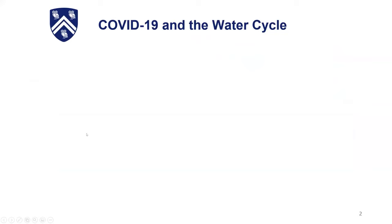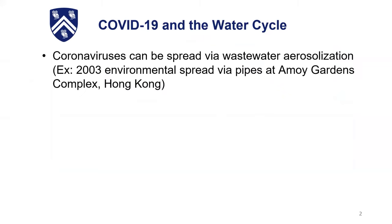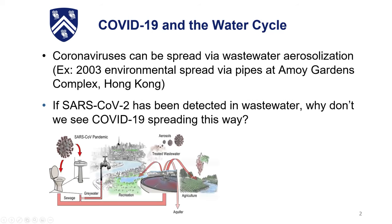The motivation for this work came from thinking about how COVID-19 will be impacted by the water cycle and vice versa. We knew from the last outbreak of SARS in 2003 that it could be spread through wastewater aerosolization. We saw this in Hong Kong, where in an apartment complex, one family had gotten infected with SARS, and afterwards many families were infected — traced back to leaky bathroom pipes combined with poor air ventilation systems. Since the start of COVID-19, we've seen SARS-CoV-2 detected in wastewater.